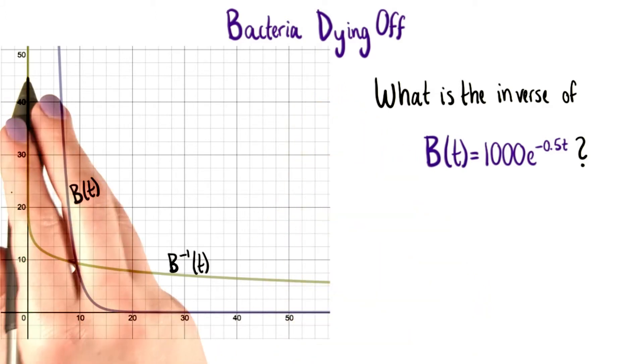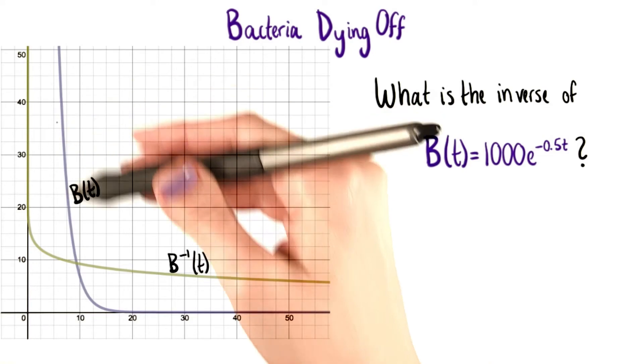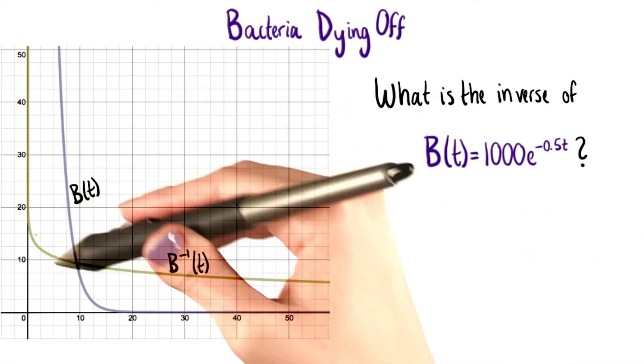That means we're looking for the equation of this graph right here. This is B(t), and this is B inverse of t.